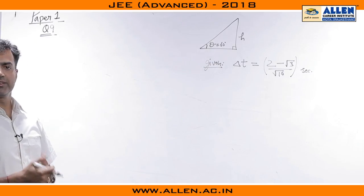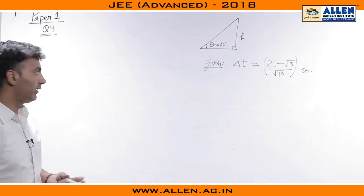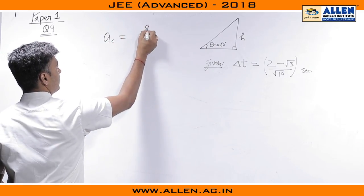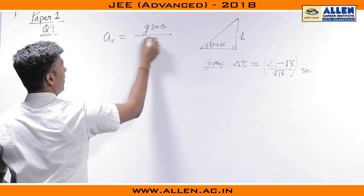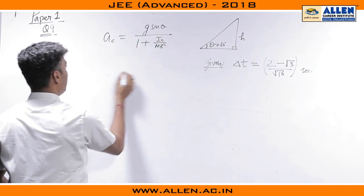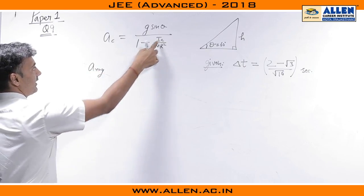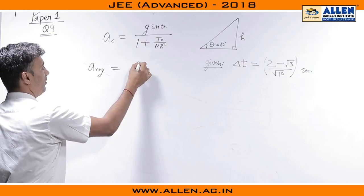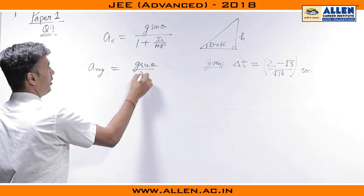Now, using the ideas of rolling on an inclined plane, this is the expression we get for acceleration of center of mass: g sin theta upon 1 plus Ic by MR square. For a ring, since Ic is MR square, acceleration comes out to be g sin theta by 2.